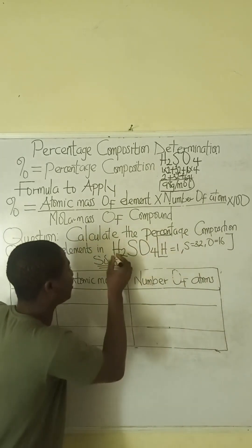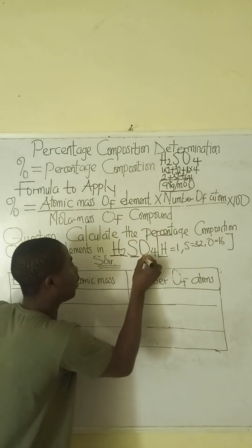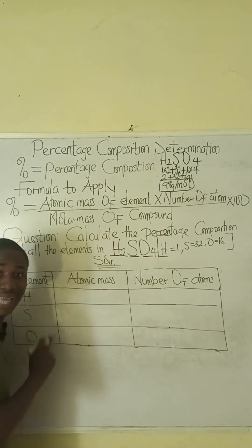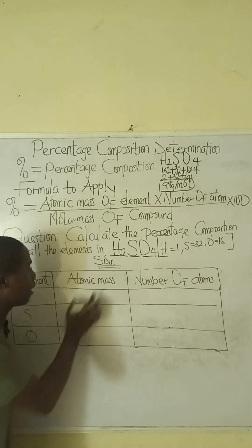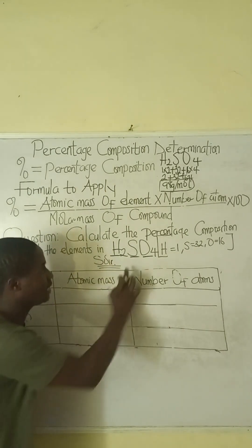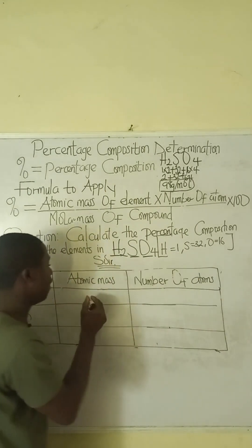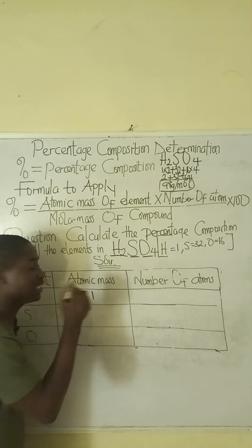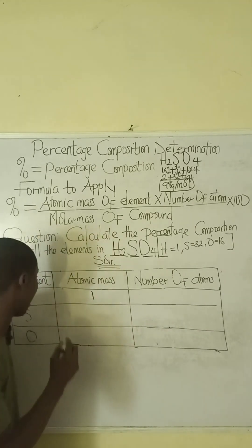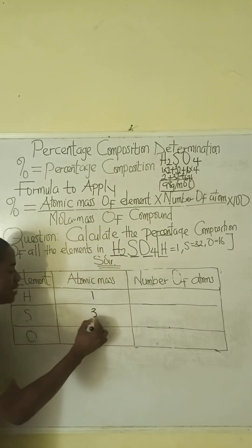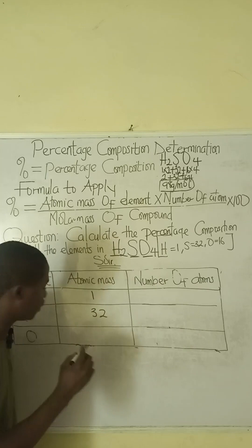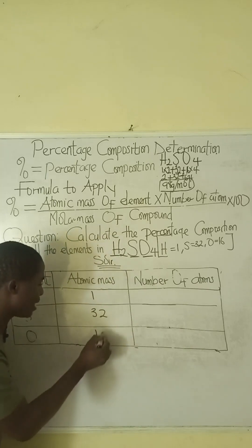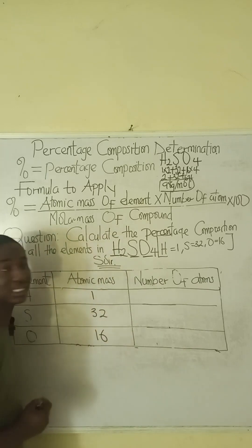We have three elements present in this compound: H, S, and O. The atomic masses are: hydrogen = 1, sulfur = 32, and oxygen = 16.